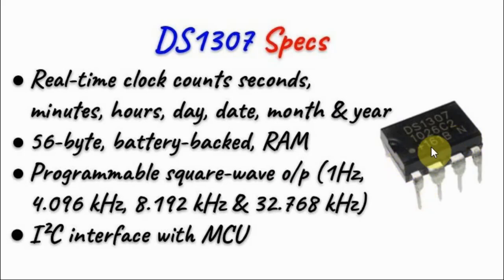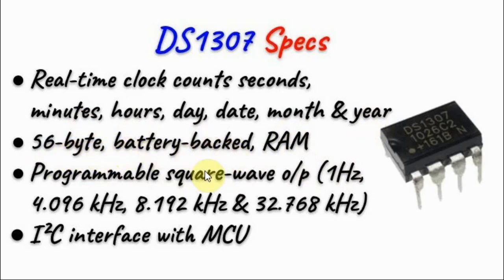The DS1307 is a real-time clock IC that counts seconds, minutes, hours, day, month, and year. It has on-board 56 bytes of battery-backed programmable RAM. It can output a programmable square wave at 1 Hz, 4 kHz, 8 kHz, and 32 kHz, and it is interfaced with a microcontroller using an I2C connection.